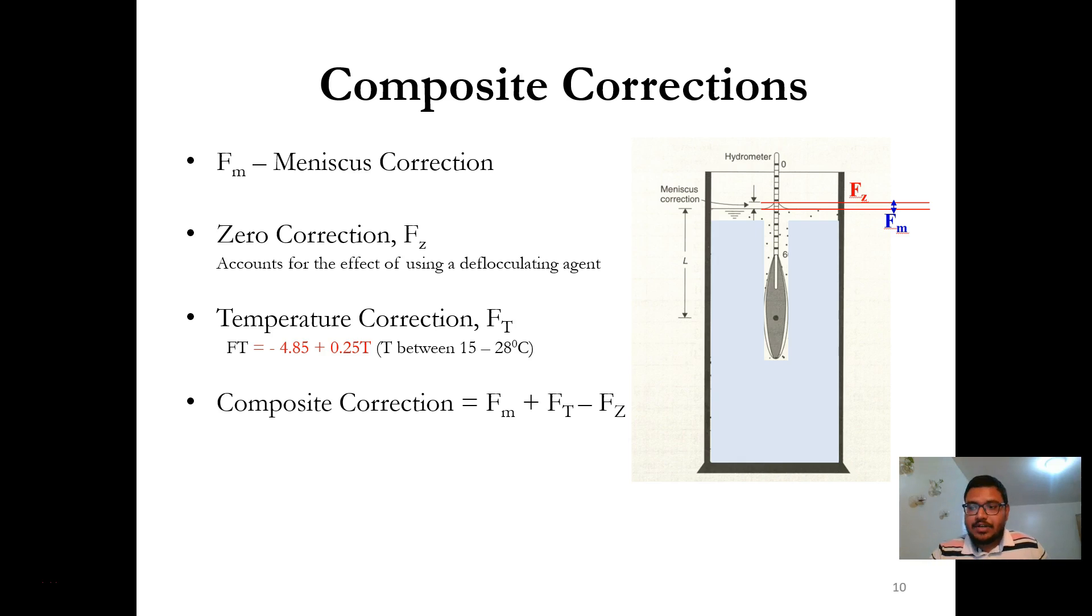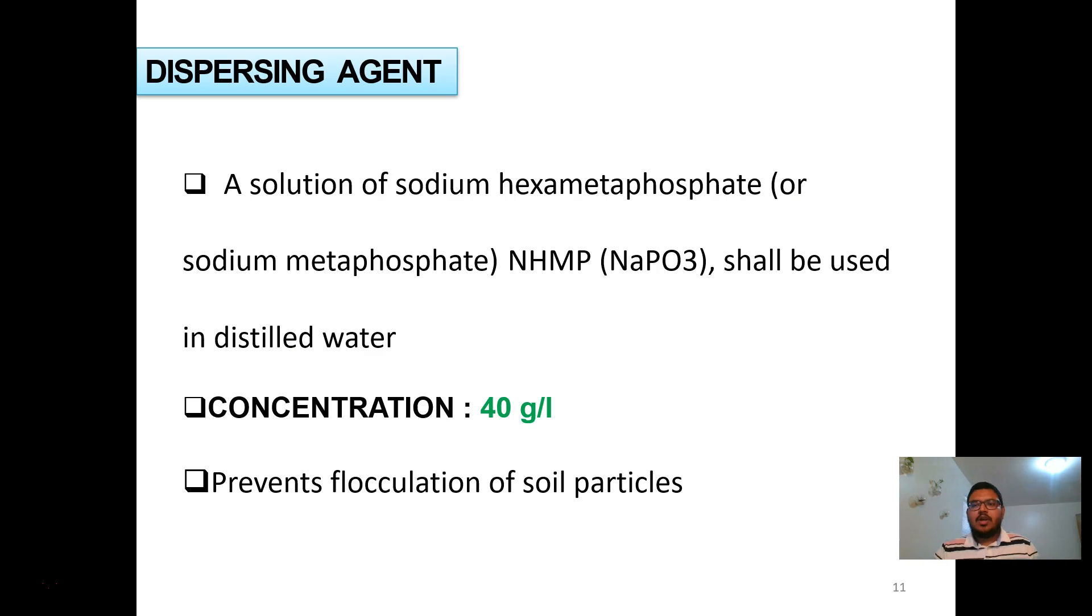Temperature correction is also required, since during the experiment, temperature might vary from the ideal temperature. To prevent flocculation of soil particles, a dispersing agent is necessary. In this experiment, we will use a solution of sodium hexametaphosphate in distilled water. The concentration of that solution will be 40 grams per liter.